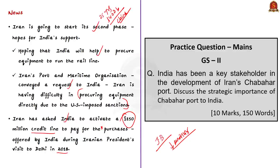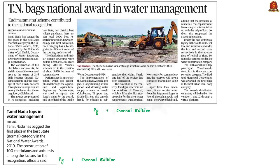This is all about the discussion of this news article. Today we covered almost all aspects of India-Iran relations in recent years. Let us move on to the next news article discussion. This news article is about the recently released National Water Awards of 2019. The news is that Tamil Nadu has got the first place in the best state category in the National Water Awards.